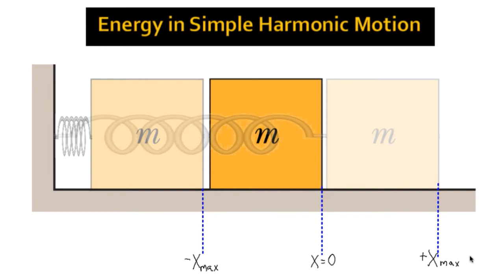We'll label from the right side of the cube, we'll call that x equals zero position. Then I pull the cube out to x max position, it stretches the spring, I release it, and it oscillates back and forth about the point x equals zero.